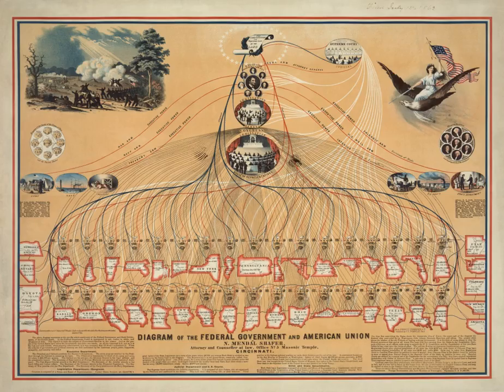The Federal Government of the United States is the National Government of the United States, a federal republic in North America, composed of 50 states, a federal district, five major self-governing territories, and several island possessions.